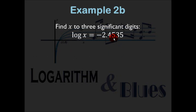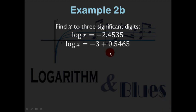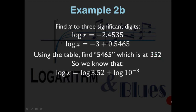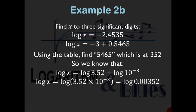Example 2B: the whole number immediately below the given value is −3, so add 0.5465. Look up 5465 in the table — it appears at row 35, column 2, corresponding to 3.52. So log x = log 3.52 + log 10⁻³, which gives x = 3.52 × 10⁻³ = 0.00352. Using 10^(−2.4535) on a calculator is faster, but understanding the table method is important.